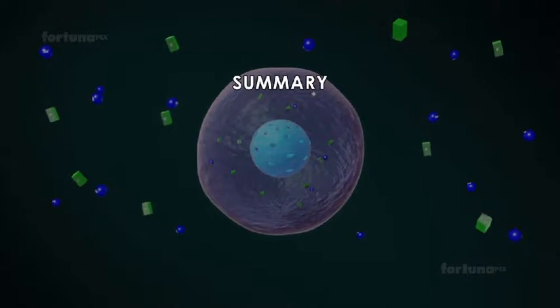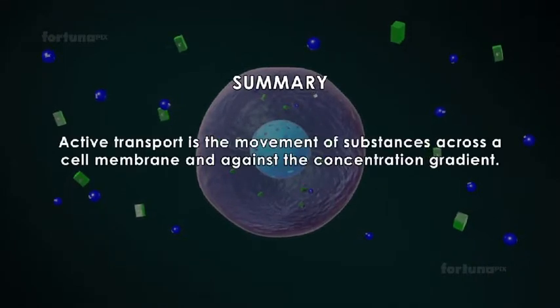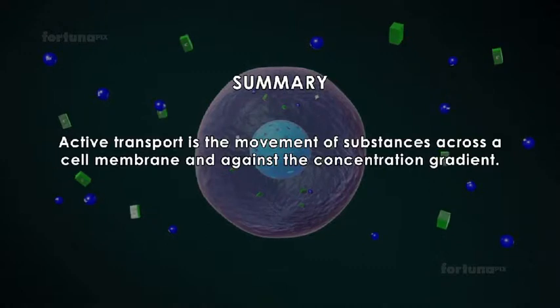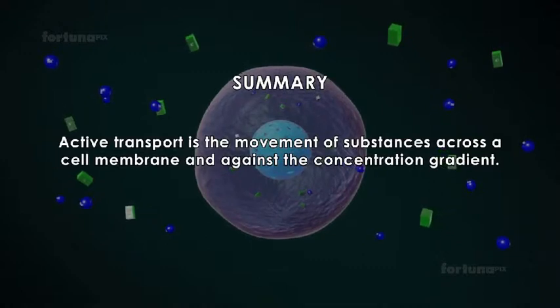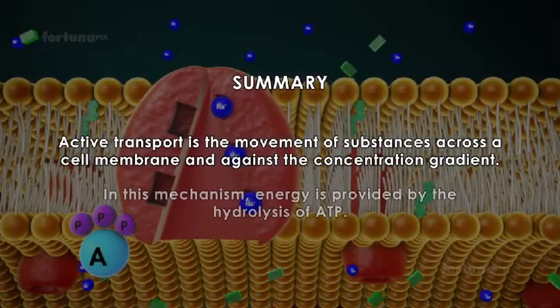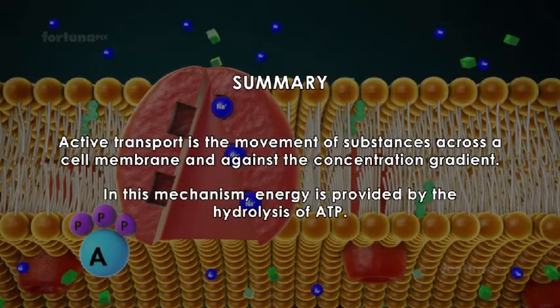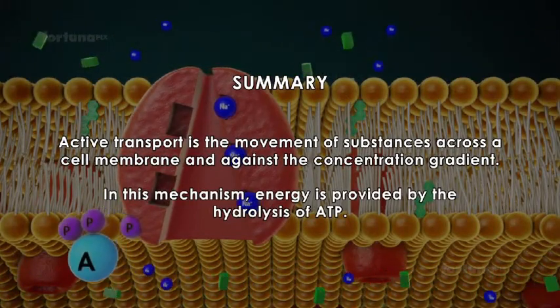Summary: Active transport is the movement of substances across a cell membrane and against the concentration gradient. In this mechanism, energy is provided by the hydrolysis of ATP.